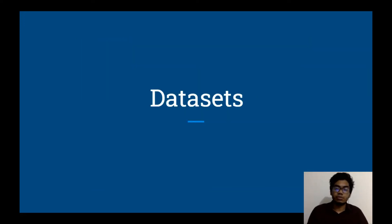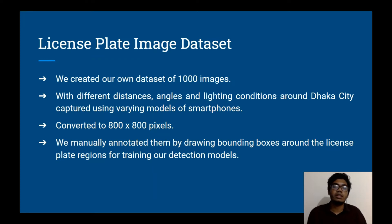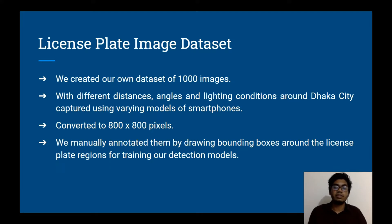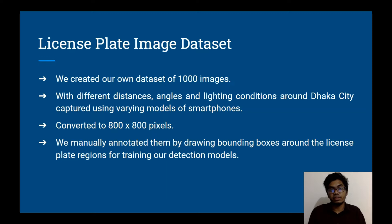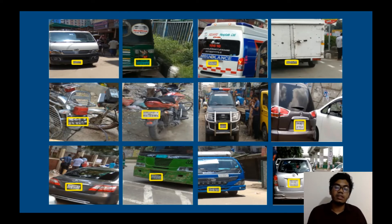Now let's talk about the datasets we have constructed. We have constructed two datasets. The first is the license plate image dataset, which includes 1,000 images taken at different distances, angles, and lighting conditions around Dhaka City, captured using various models of smartphones. These images were converted to 800×800 pixels and manually annotated by drawing bounding boxes around the license plate regions for training our detection models. Here are some examples from the license plate image dataset showing the annotations.